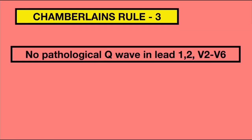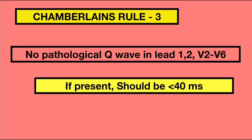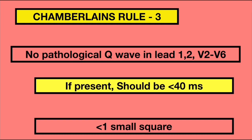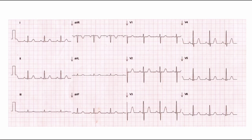Rule 3 says that there should be no pathological Q waves in leads 1, 2, and V2 to V6. If present, it should be less than 40 ms. Q waves are considered pathological if they are more than 40 ms in width, more than 2 mm in depth, or more than one-fourth of the height of the QRS complex. In this ECG, we can see that all Q waves are less than 40 ms in duration and the height is also not suggestive of pathological.